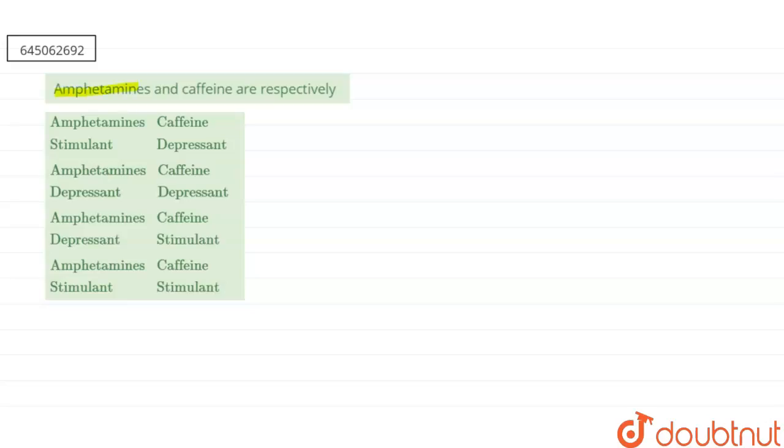Our question says that amphetamines and caffeine are respectively. So here if we are talking about our question, it is regarding the amphetamines and second one is our caffeine here, that is mainly present in the coffee.